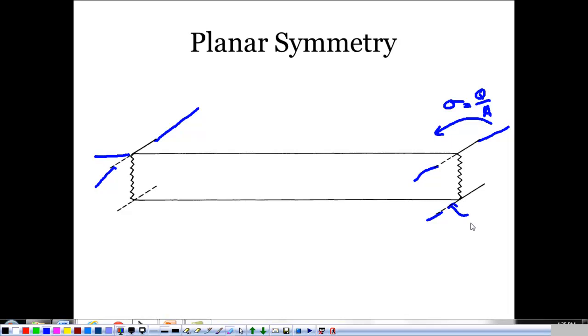Same thing on the bottom surface, we have an equal amount of sigma charge per unit area. Let's say it's positive this time. Because of the fact that it's infinitely long, we see the electric field just pointing up at all points from this thing.